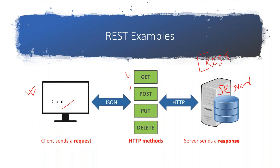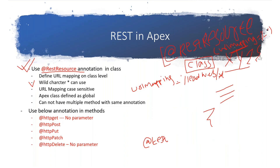This class is going to be called by the client — from outside the org. Whenever you write a REST class, that class should be global. The URL mapping is case-sensitive, so wherever you call it you must use the same name. Inside the class we write different HTTP methods, and for each HTTP method we have different annotations: @HttpGet, @HttpPost, @HttpPut, @HttpPatch, @HttpDelete.